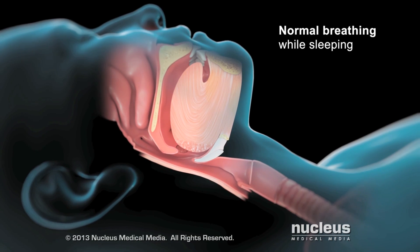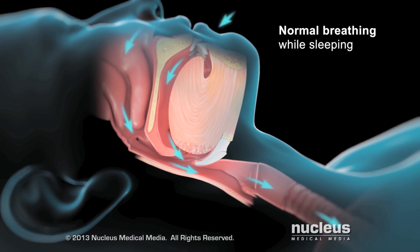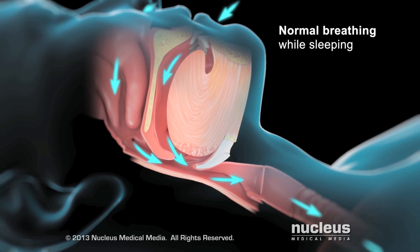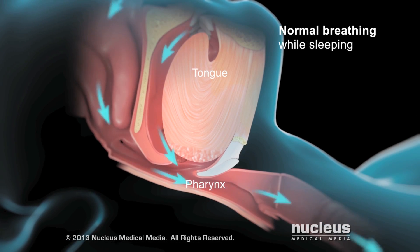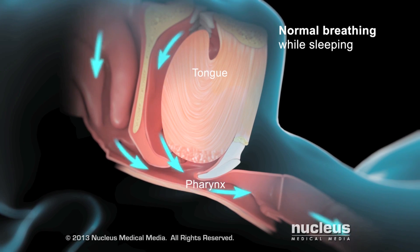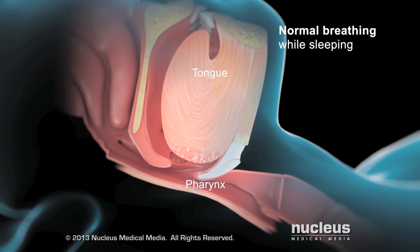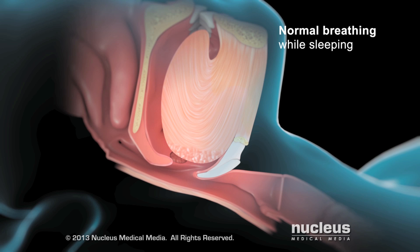When you sleep, it's normal for the muscles in your mouth, tongue, and pharynx to relax slightly, but not enough to block your airway.